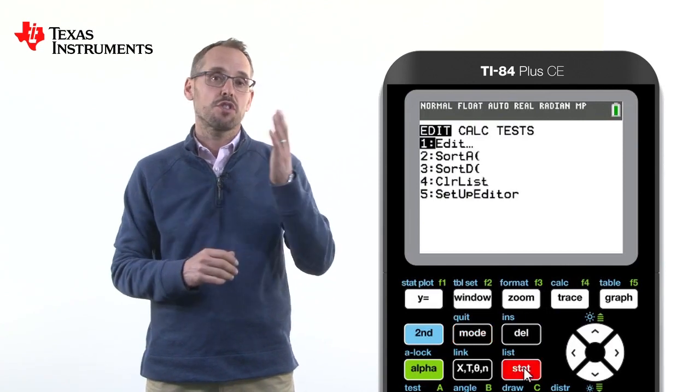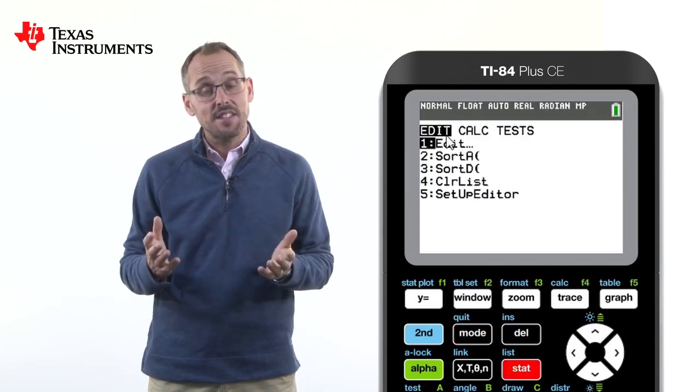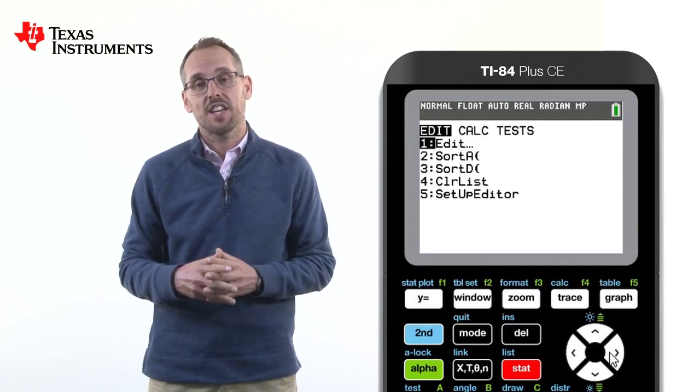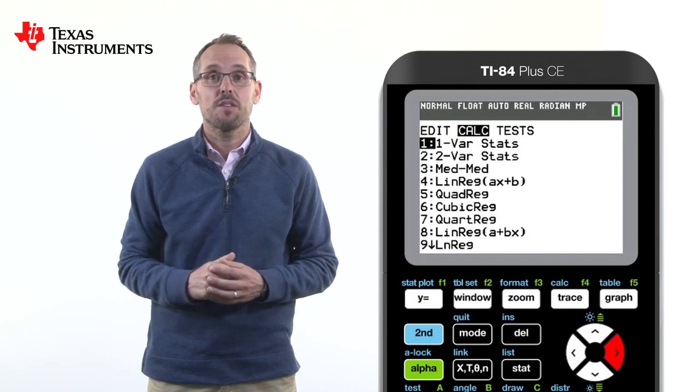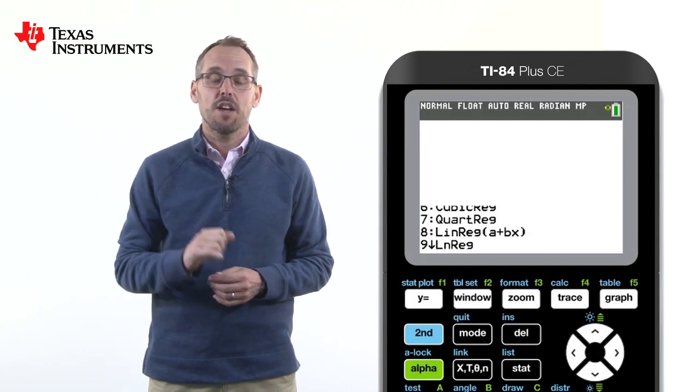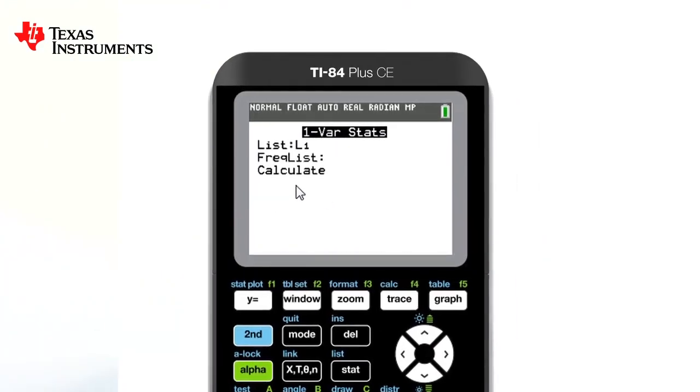And then you'll notice across the top, rather than going to edit where we enter the values, we go across to calc, which stands for calculate. There was only one variable, that was the number of siblings. Press enter on number one and then you'll see the following screen.